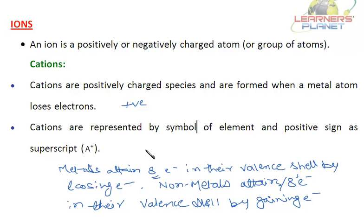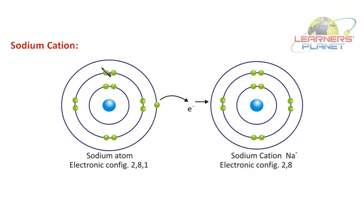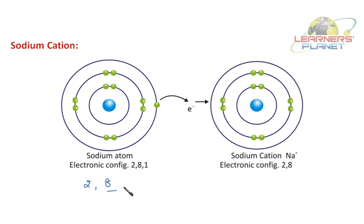Let's take the example of the sodium cation. How is the sodium cation formed? The configuration of sodium is 2, 8, 1. It can attain a 2, 8 configuration by losing one electron. 2, 8 is the configuration of the noble gas neon. So sodium attains this noble gas configuration by losing one electron, forming a sodium cation.